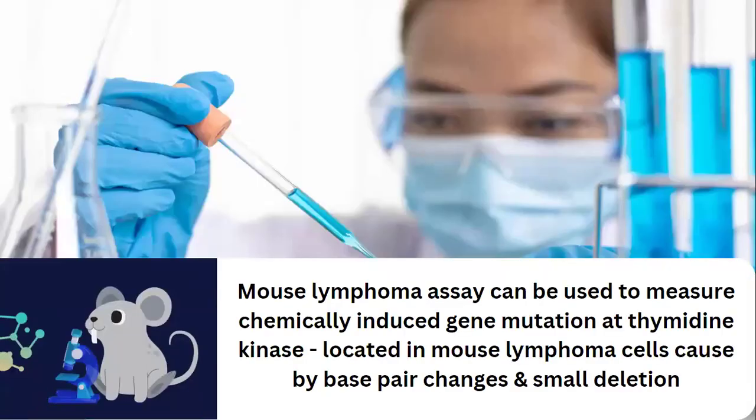The basic test suggested for detecting chromosomal abnormalities is the Mouse Lymphoma Assay. It is used to measure chemically induced gene mutation at the thymidine kinase locus in mouse lymphoma cells. This test helps us understand gene mutation with the help of thymidine kinase.